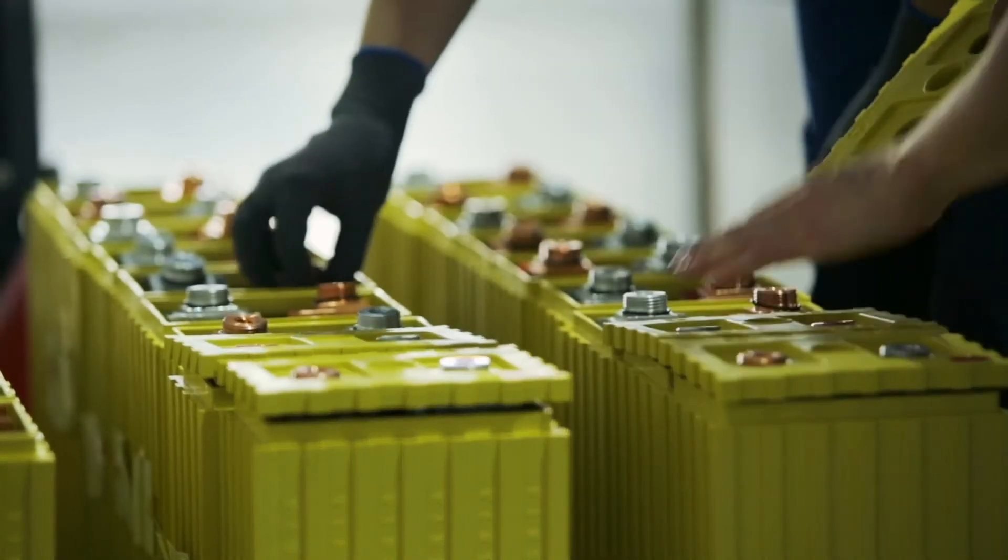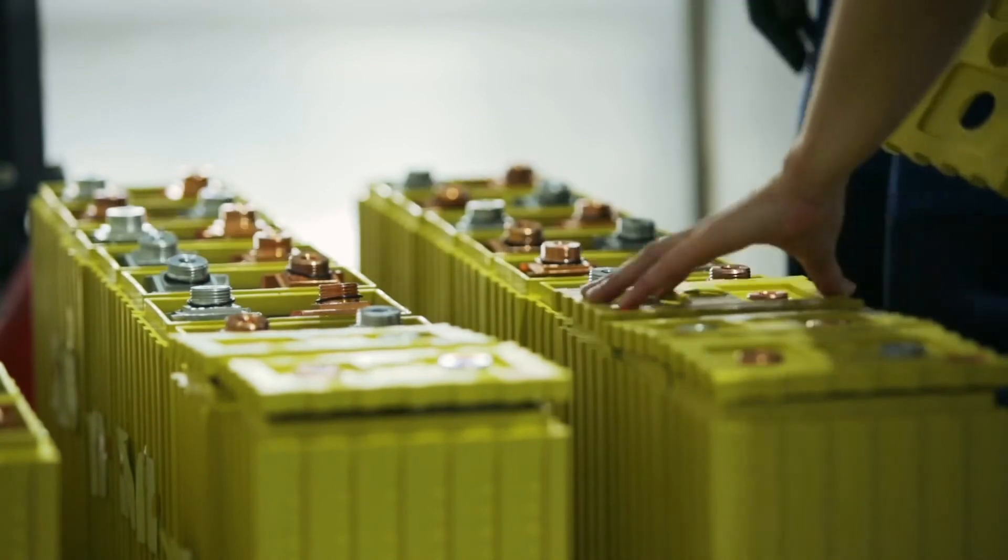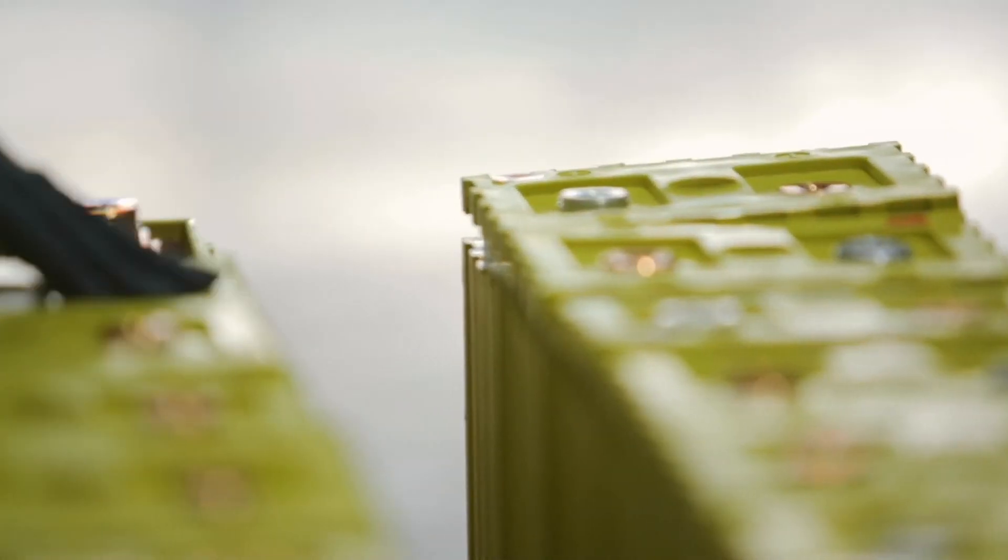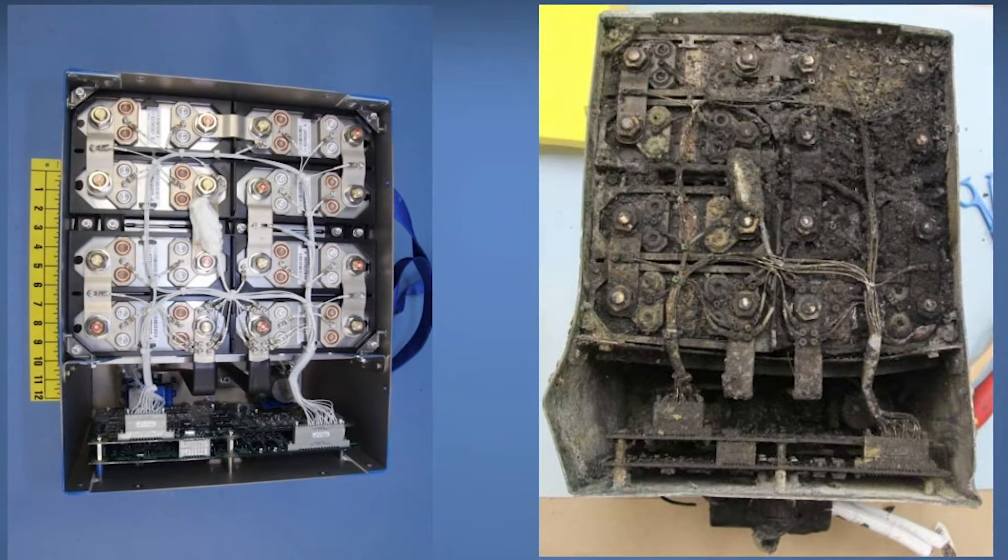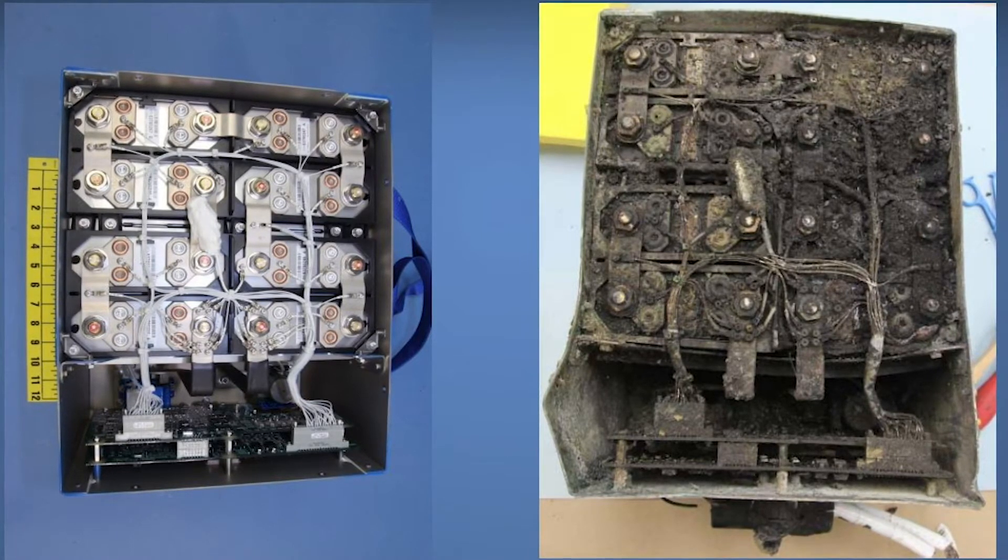The problem with metal batteries is that recharging involves electrodeposition to recover pure metal from the ions in solution, which is sometimes unstable to the growth of finger-like deposits called dendrites that can cause short circuits.